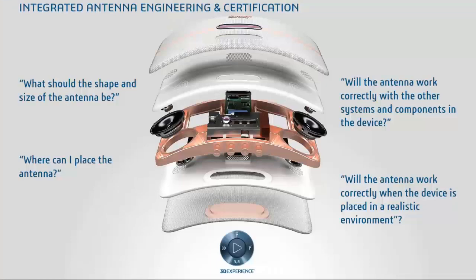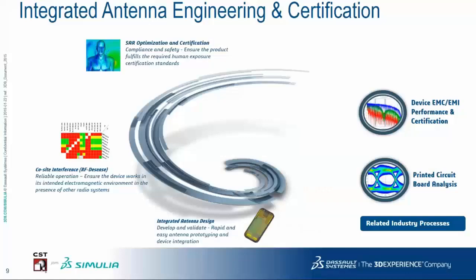The industry processes I selected today all deal in some way with communication, and communication means antennas. These industry processes try to answer three questions: What shape and size should the antenna be? Where can I place the antenna? And does the antenna still work when placed in the system in a realistic environment? The integrated antenna engineering and certification process includes different workflows such as integrated antenna design, interference or RF desense simulation, and optimization and certification. There are also related processes like device EMC/EMI performance certification and printed circuit board analysis. Let's start with the antenna design workflow and what new features are in the 2019 release relevant to it.